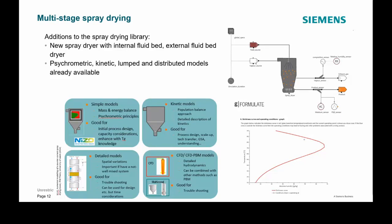There are typically two stages of drying: a constant rate of drying and a falling rate drying. A challenge is that different particle shapes emerge through the drying process, impacting product quality. This also changes the drying process later on — for example, if you then have increased fouling in your spray dryer.